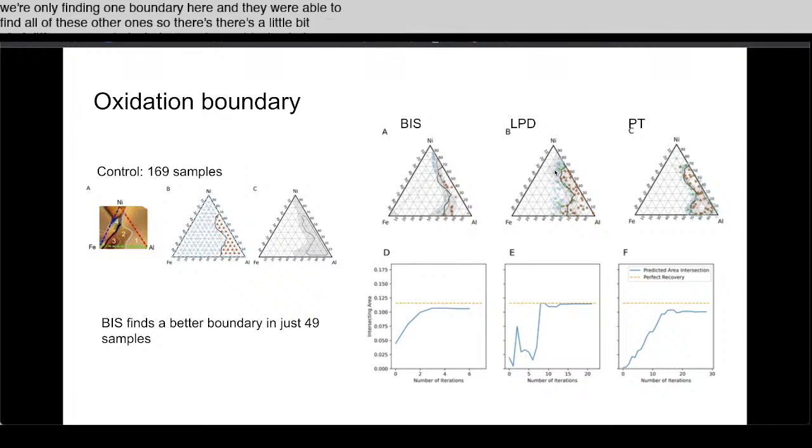But we can find a good boundary for this protected region with as few as 49 samples in this experiment by using these different algorithms. That's also nice - that is a reduction in work required to find the one boundary.